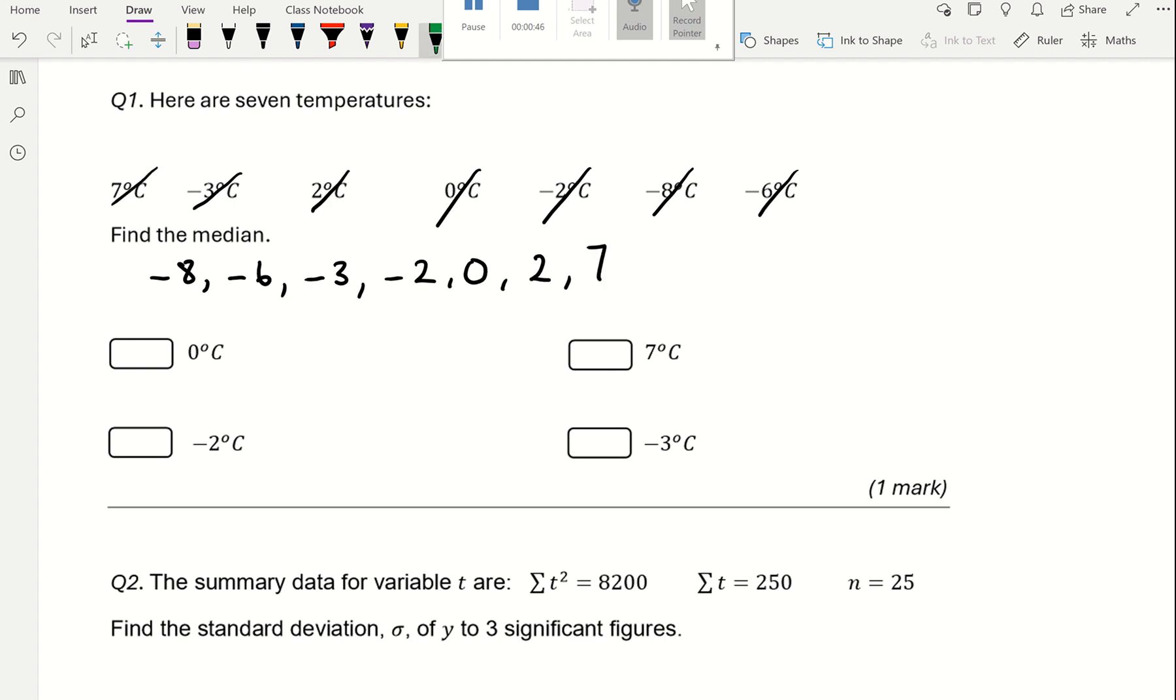Then we cross them out one from each side, from the beginning and the end of the data, in pairs. That's one pair, that's two pairs, and that's the third pair. You can see that the median is negative 2, the number in the middle.